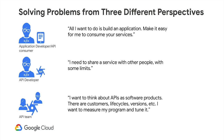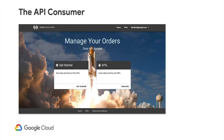The application developer or API consumer might say: all I want to do is build an application — make it easy for me to consume your services. The API developer who packages up services might say: I need to share a service with other people, but there are limits — we have to control what they can do. The API team running the program might say: I want to think about APIs as software products with customers, life cycles, and versions, and I want to measure and tune my program. In this case, one of our suppliers has a large ERP system and we'd like to check on the status of orders, and they've granted us an API to automate that process.